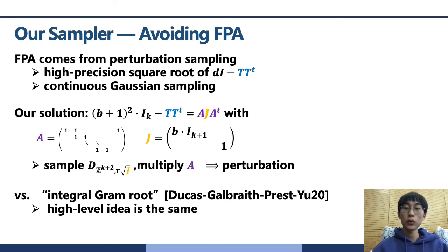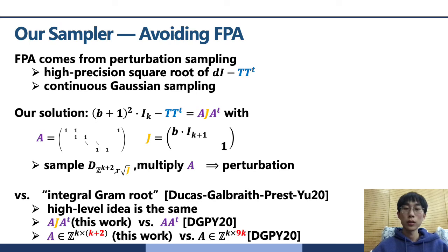With such an integral decomposition, the perturbation sampling can be done by applying a linear transformation of A on the discrete Gaussian. This is simple, fast, and highly parallelizable. The idea is inspired by the work of Ducas, Galbraith, Prest and Yu. But the technical difference is that the middle matrix G is diagonal, but not identity matrix, which allowed to reduce the size of A, that is only k plus 2 columns, much smaller than the size of the Gram root given in DGPY 20. This compact matrix greatly improves the sampling efficiency.